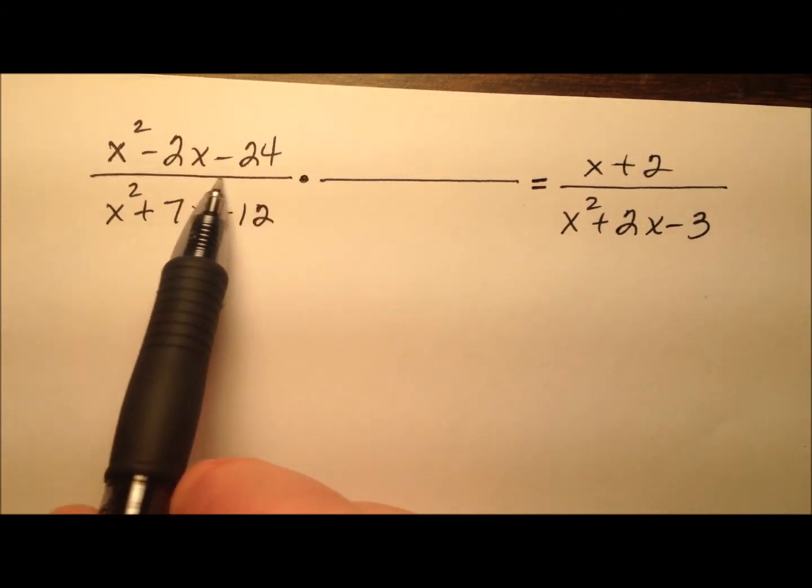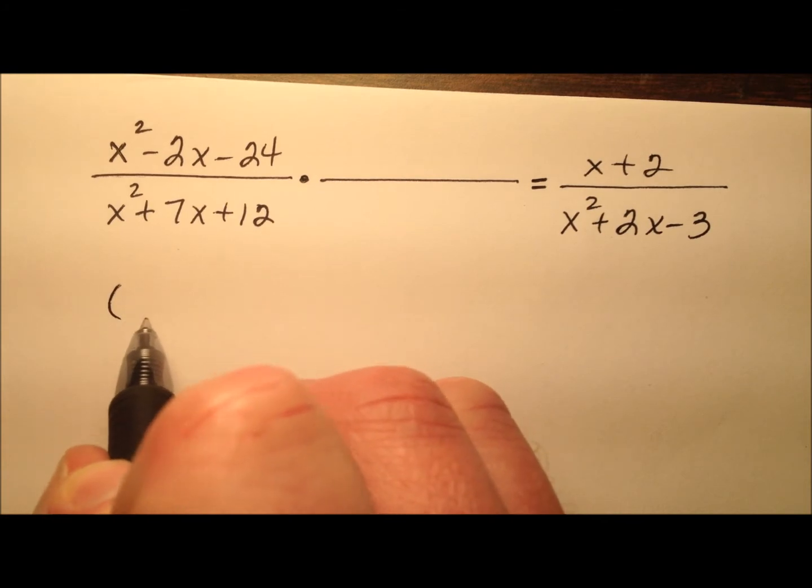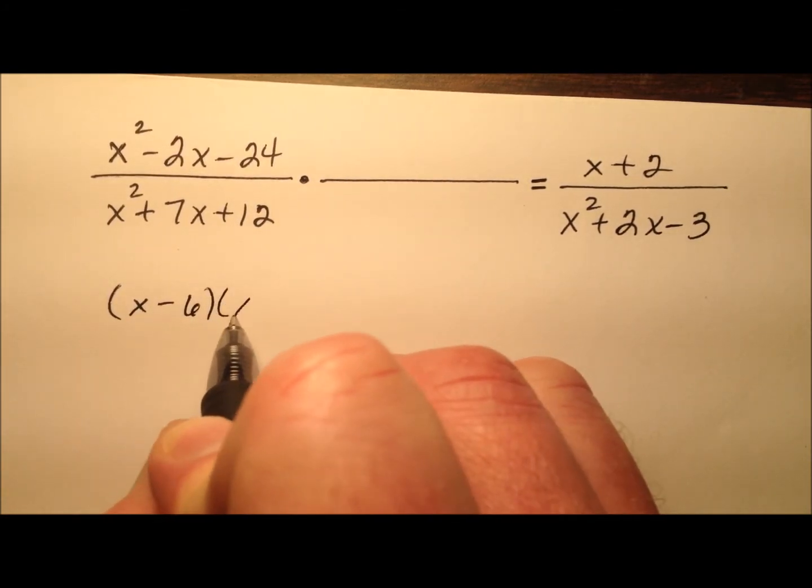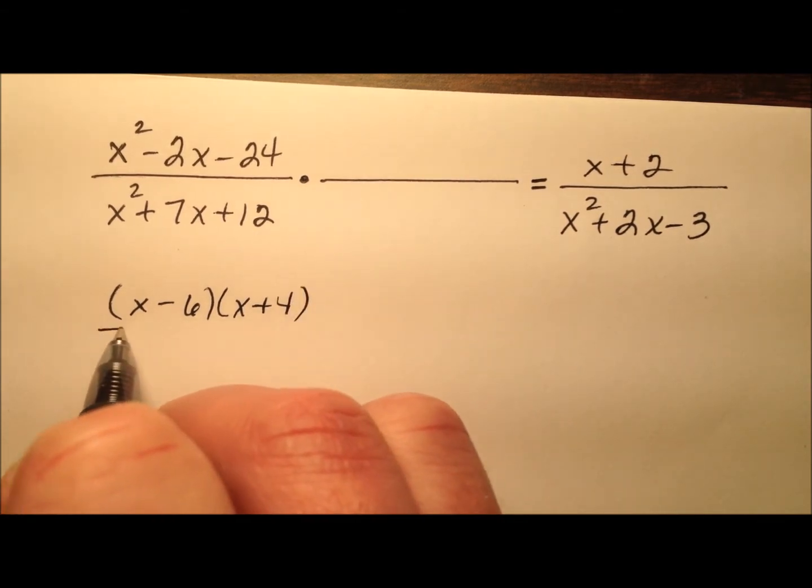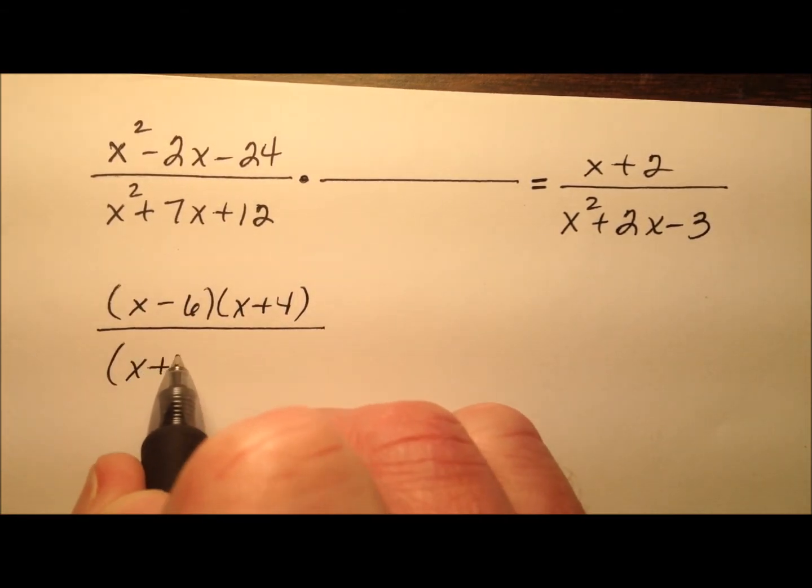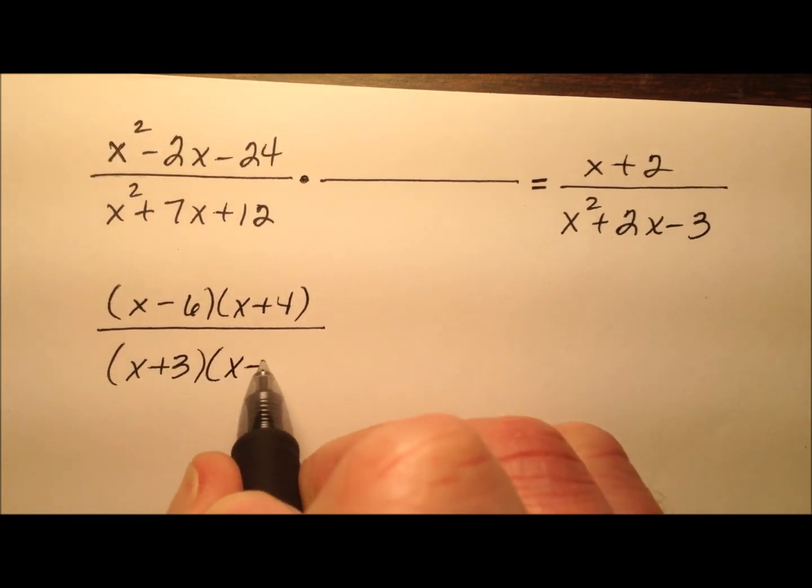All right, so when I look at this first quadratic, it looks like this will factor as x minus 6 and x plus 4, and below that it looks like I'll have x plus 3 and x plus 4.